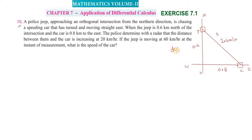If the jeep is moving at 60 kilometer per hour, at the instant of measurement, what is the speed of the car? We need to find dx/dt. Given: ds/dt = 20, y = 0.6. dy/dt is in the downward direction, so dy/dt = -60.